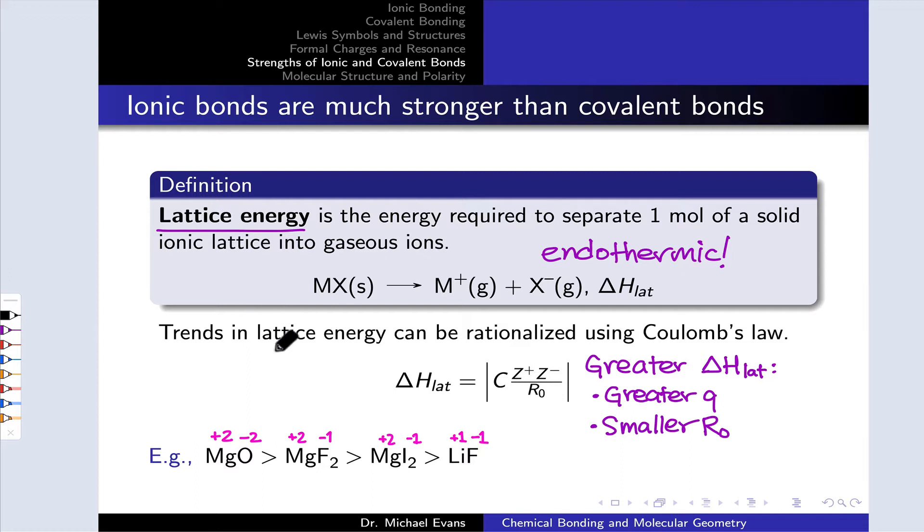So we can see that from left to right, the charges are decreasing in magnitude, with +2/-2 being associated with the greatest, the most endothermic lattice energy, and +1/-1 being associated with the smallest or least endothermic lattice energy.